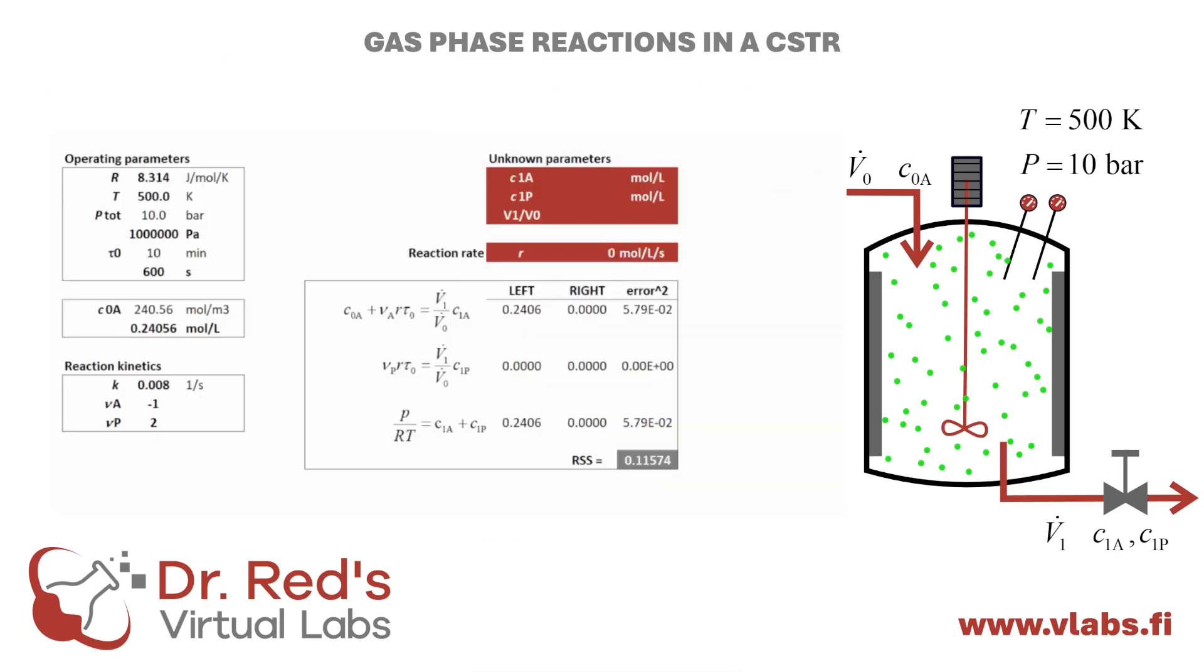Let's go ahead and solve the system of equations in Excel. The operating parameters are displayed on the left. Temperature is set at 500 Kelvin, pressure at 10 bar, and we've selected a spacetime of 10 minutes. The feed concentration is determined from the pressure and temperature. In this example, the reaction rate constant is 0.008 per second.